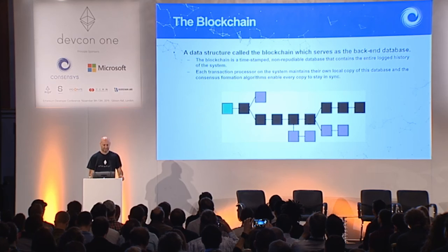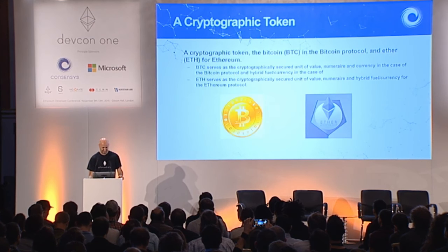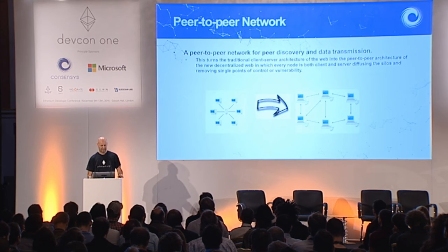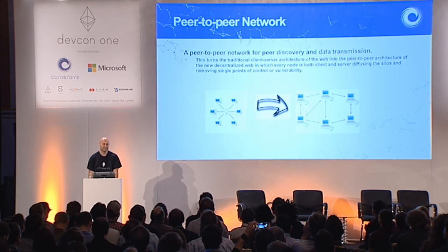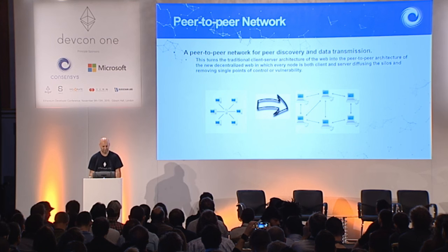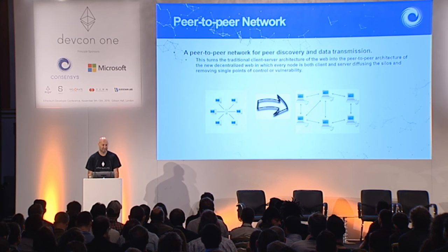First is a blockchain, a data structure that you're all quite aware of. Second is the cryptographic token — the Bitcoin or Ether. Third is peer-to-peer networking systems, which turns a traditional client-server infrastructure into one in which all nodes are clients and servers.